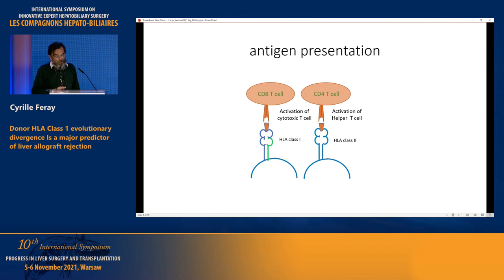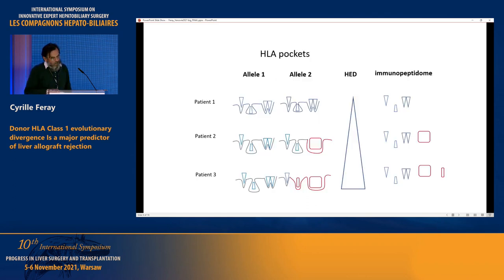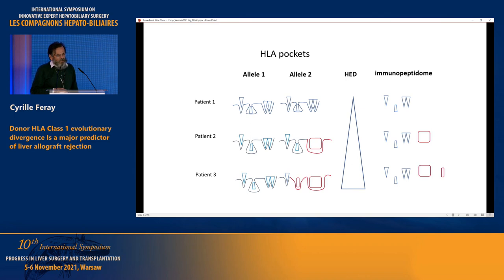This peptide repertoire, the immunopeptidome, is targeted by cytotoxic T cells. For class 2, it is a presentation of the immunopeptidome to helper cells to induce the immune response. This is a very old concept — the heterozygous advantage — discovered 50 years ago by Zinkernagel.